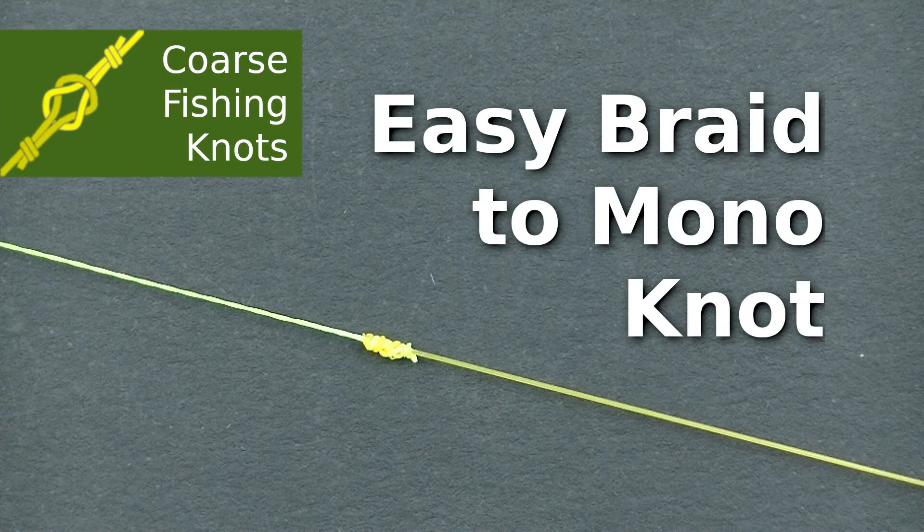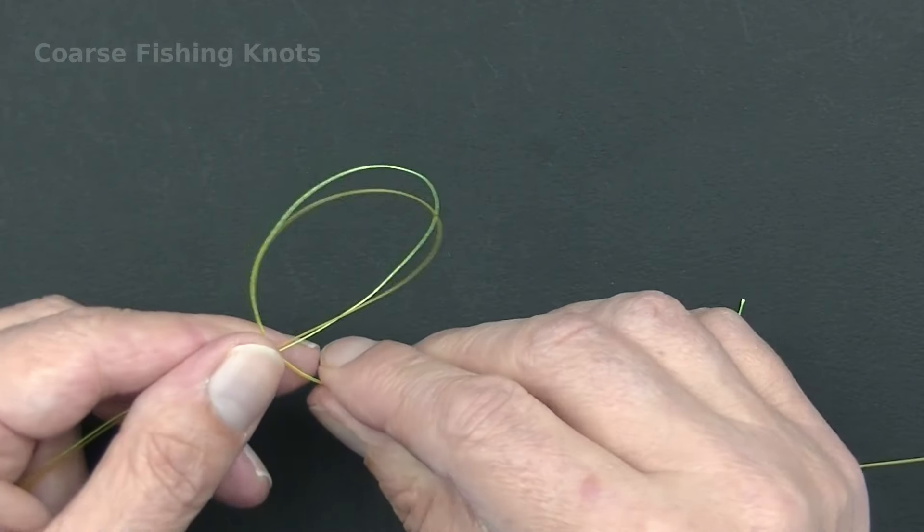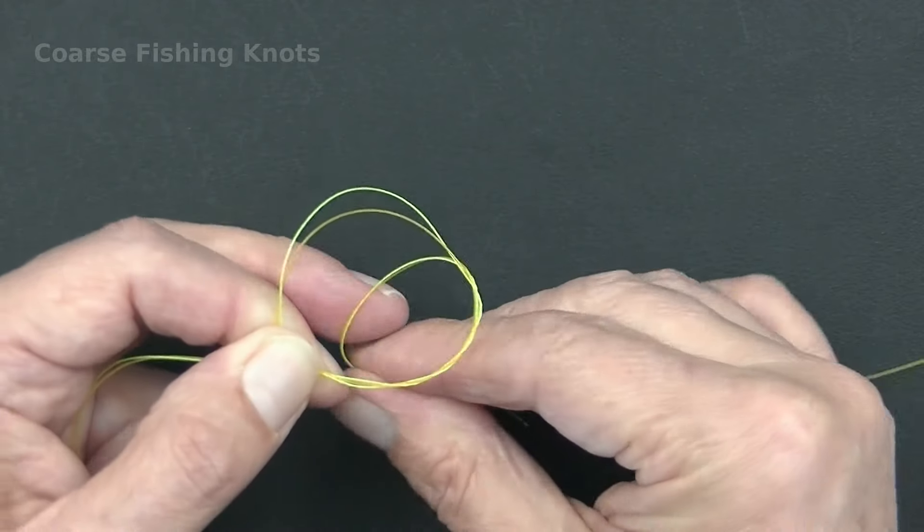Easy Braid to Mono Knot is used to tie a nylon leader to braided mainline.